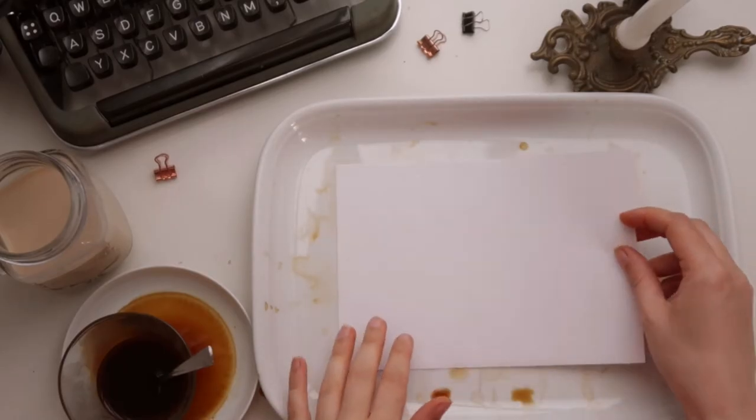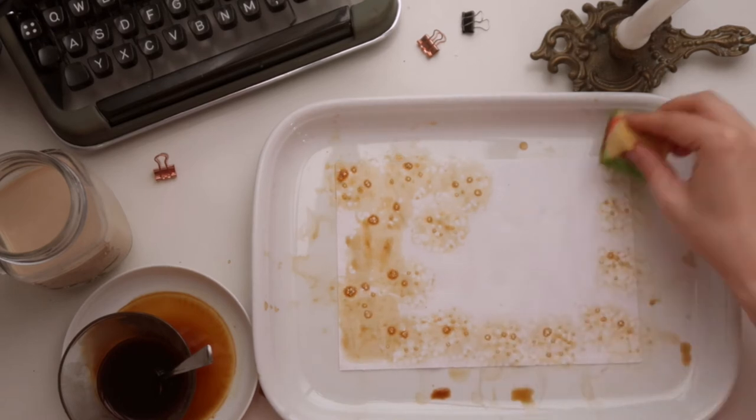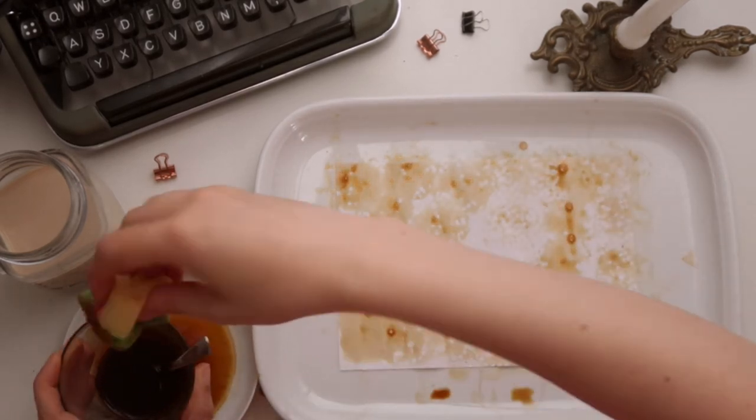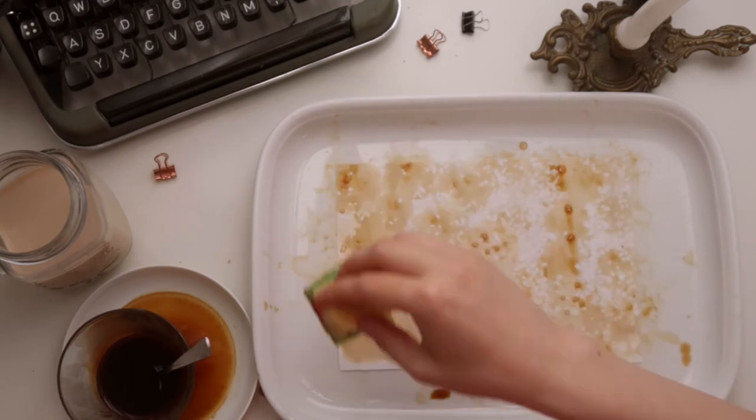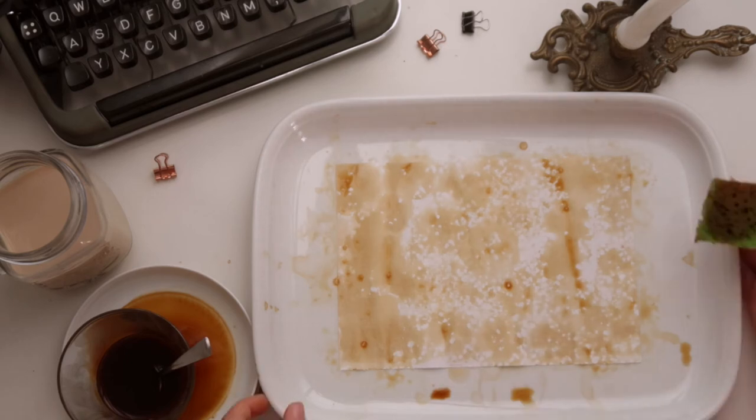For the next pattern we do a more organic looking attempt by using just a normal sponge to dab the coffee onto the page. Make sure to start with the dry paper here, otherwise the coffee would spread and the pattern would get lost.